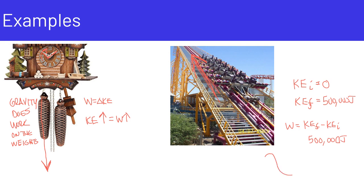Imagine the roller coaster cars being pulled up to the top of the hill. When the car reaches the top, it has all this potential energy. The car has energy it can use to do work as it goes down the hill. At the top of the hill it has zero kinetic energy because it has stopped, and at the bottom it has lots of kinetic energy — so it does work going down the hill as well.